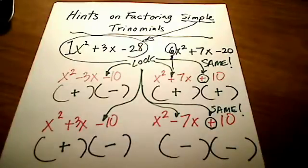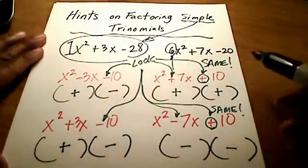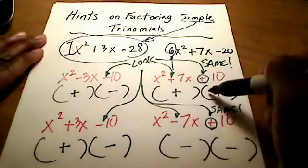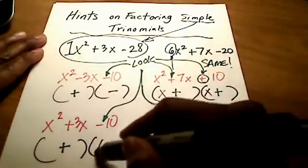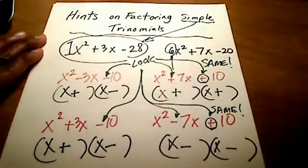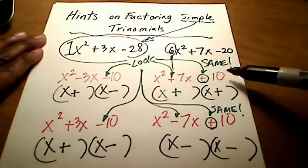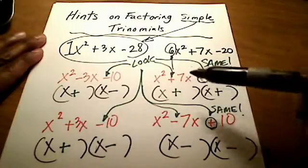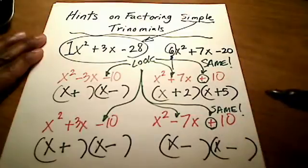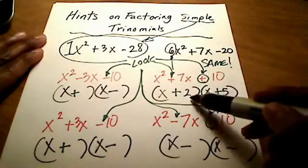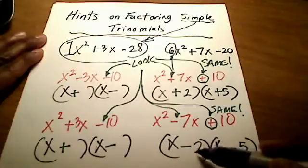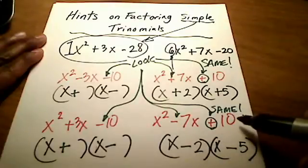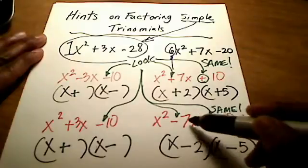The last thing to figure out when factoring these simple trinomials is: what two values are going to give us x squared? Well, x times x will — so x and x go at the beginning of each parenthesis. Then: what two numbers will multiply to get you 10 but add to get you 7? That's 2 and 5 — 2 times 5 gets you 10, and 2 plus 5 gets you 7. Similarly, negative 2 times negative 5 gets you positive 10, and negative 2 plus negative 5 gets you negative 7.